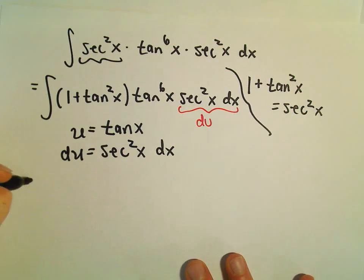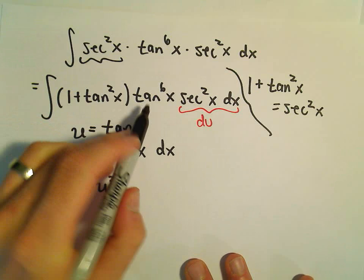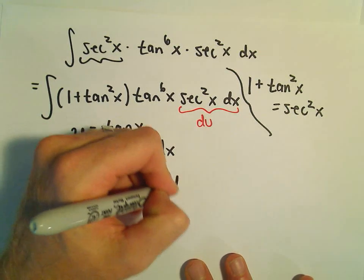And then we can just plug the u in everywhere. So we'll have 1 plus u squared. Tangent to the sixth will be u to the sixth du.